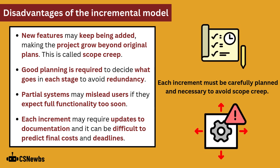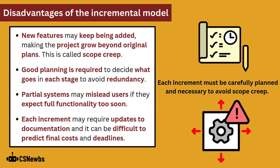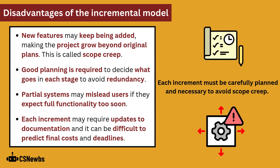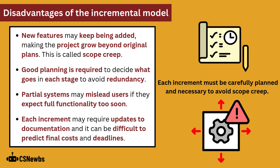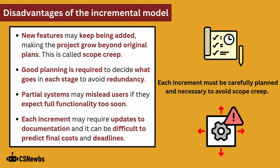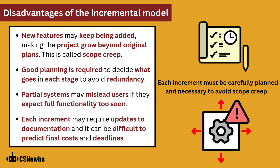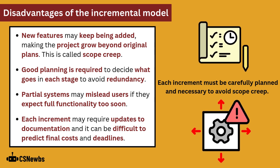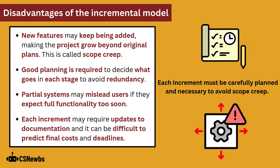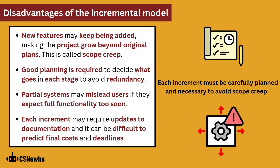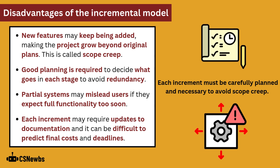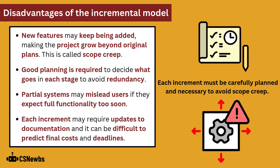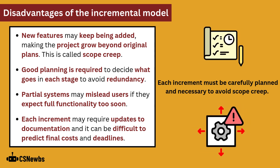Disadvantages of this model are that new features may continually be added, making the project grow beyond original plans — this is called scope creep. Good planning is required to decide what goes into each stage. Partial systems may mislead users if they expect full functionality too soon. Each increment may require updates to documentation, and it can be difficult to predict final costs and deadlines.